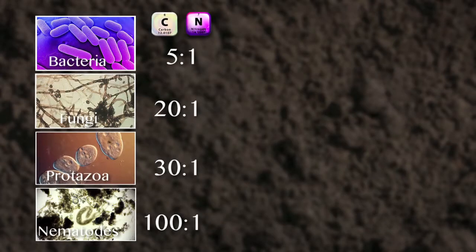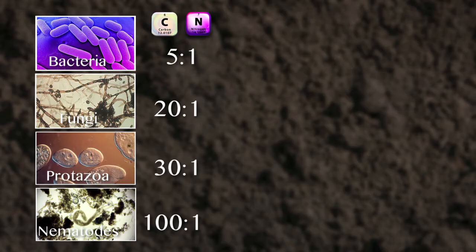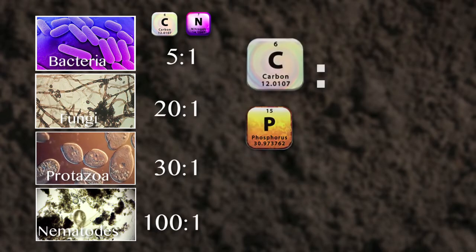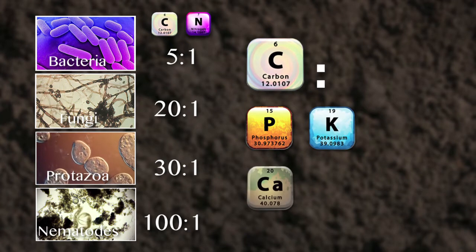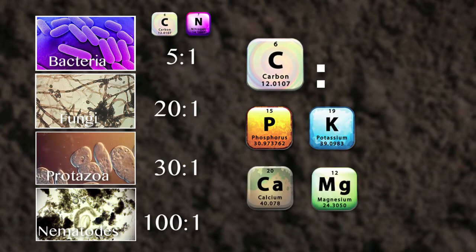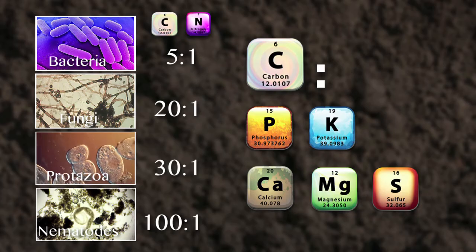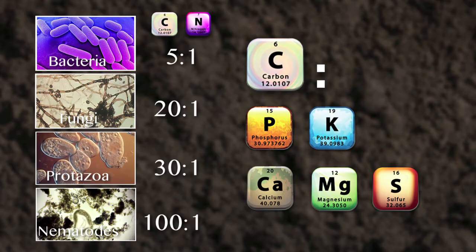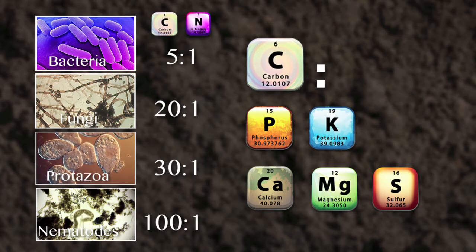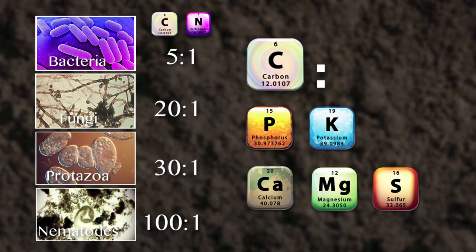When we talk about carbon to nitrogen ratios of these various trophic organisms, it isn't just carbon to nitrogen. It's also carbon to phosphate, carbon to potassium, carbon to calcium, carbon to magnesium, and sulfur. And the trace elements such as boron, manganese, iron, zinc, and copper — all of these minerals are held within specific ratios in the varying groups of microorganisms.